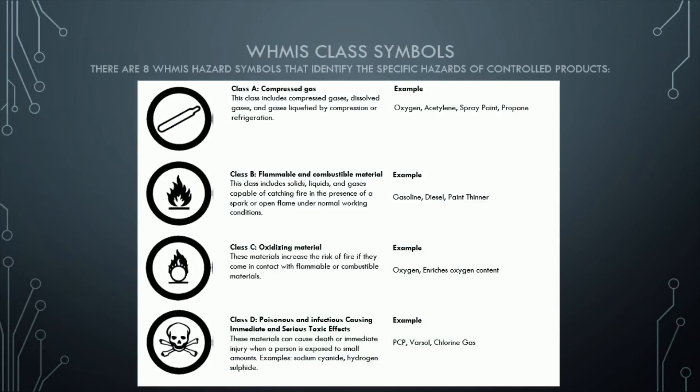There are 8 WHMIS hazard symbols that identify the specific hazards of controlled products. Class A: Compressed Gas. This class includes compressed gases, dissolved gases, and gases liquefied by compression or refrigeration. Examples: oxygen, acetylene, spray paint, propane.